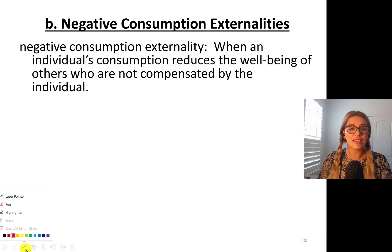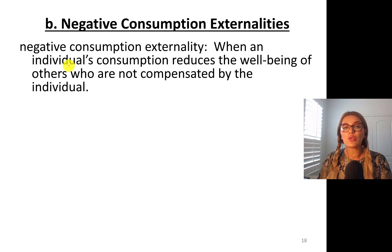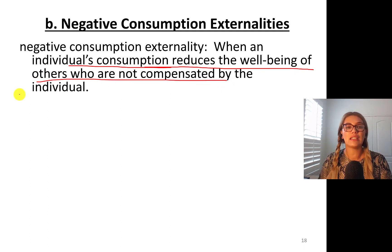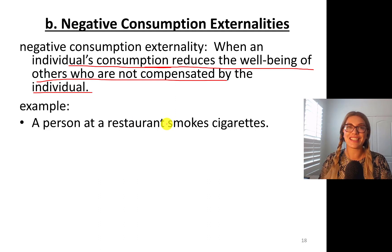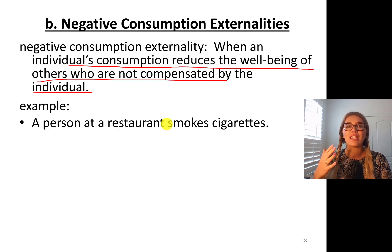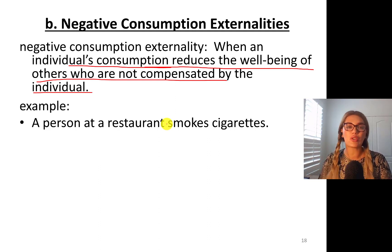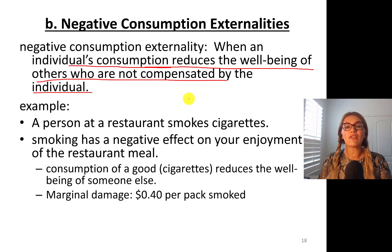So let's talk about negative consumption externalities. It happens when an individual's consumption reduces the well-being of others who are not compensated by the individual. For example, a person at a restaurant is smoking cigarettes. In the United States, you cannot smoke cigarettes in restaurants as of 1994. However, in some countries people do smoke indoors, and sometimes people smoke outside on the patio, which is quite disturbing to some people who don't smoke. So smoking has a negative effect on your enjoyment of the restaurant meal.